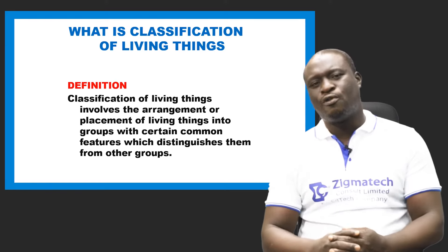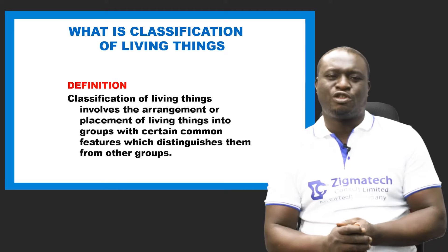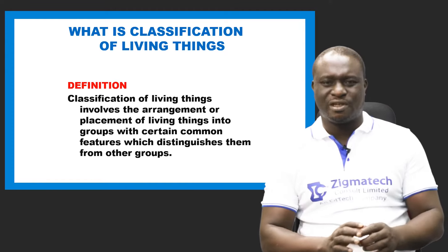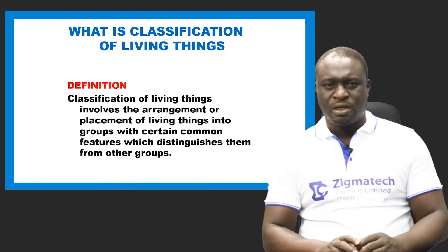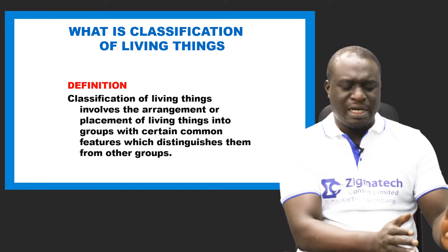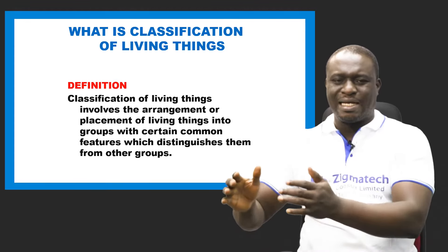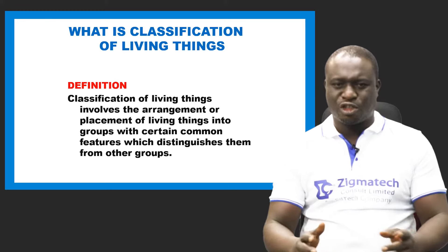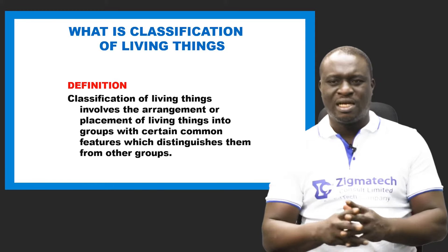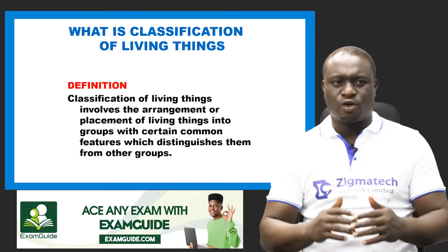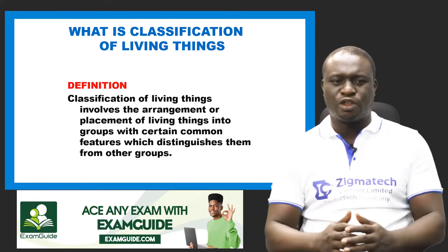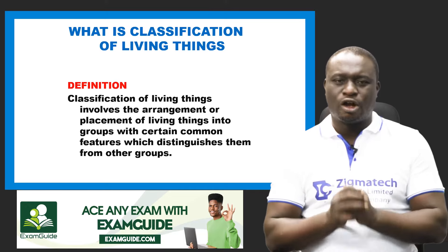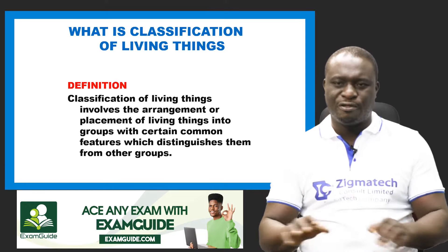One of the main purposes for classification of living things is for easy identification. In other words, when we put living things into groups, we can easily identify them. Classification of living things is simply the placement or arrangement of living things into groups with certain common features.